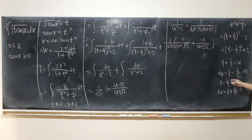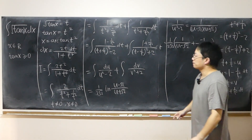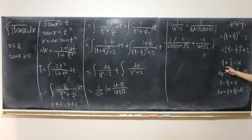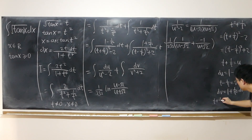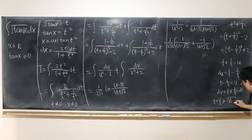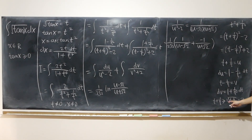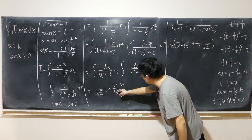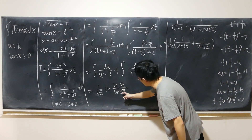Is the absolute value positive? Well, u equals t plus 1 over t, and t is positive. By the AM-GM inequality, t plus 1 over t is greater than or equal to 2 times the square root of t times 1 over t, which is just 2. So u is at least 2, meaning u minus root 2 is easily positive. So this is fine.